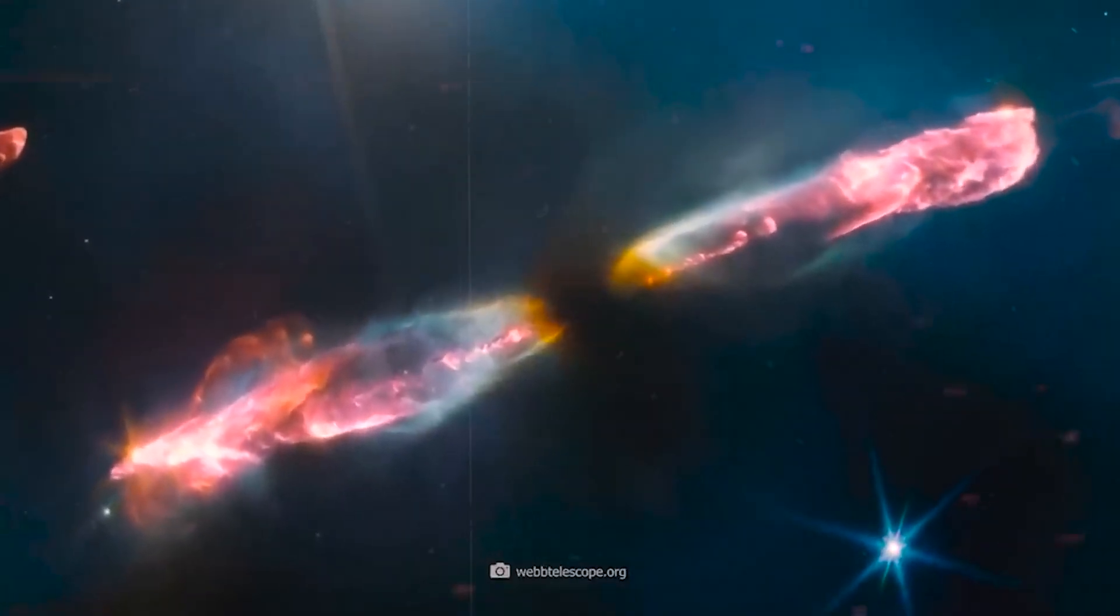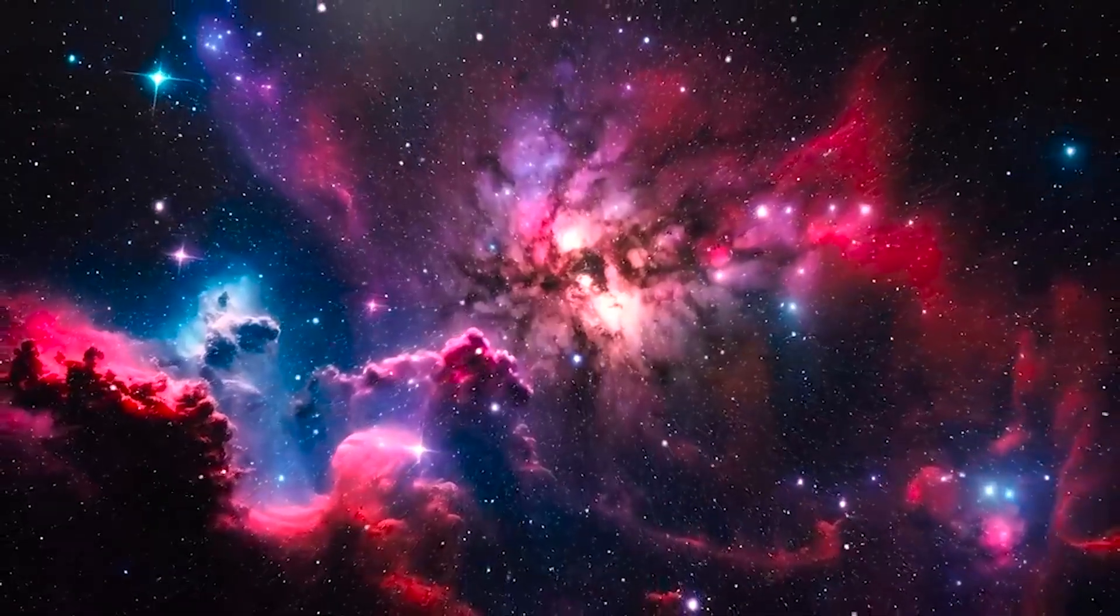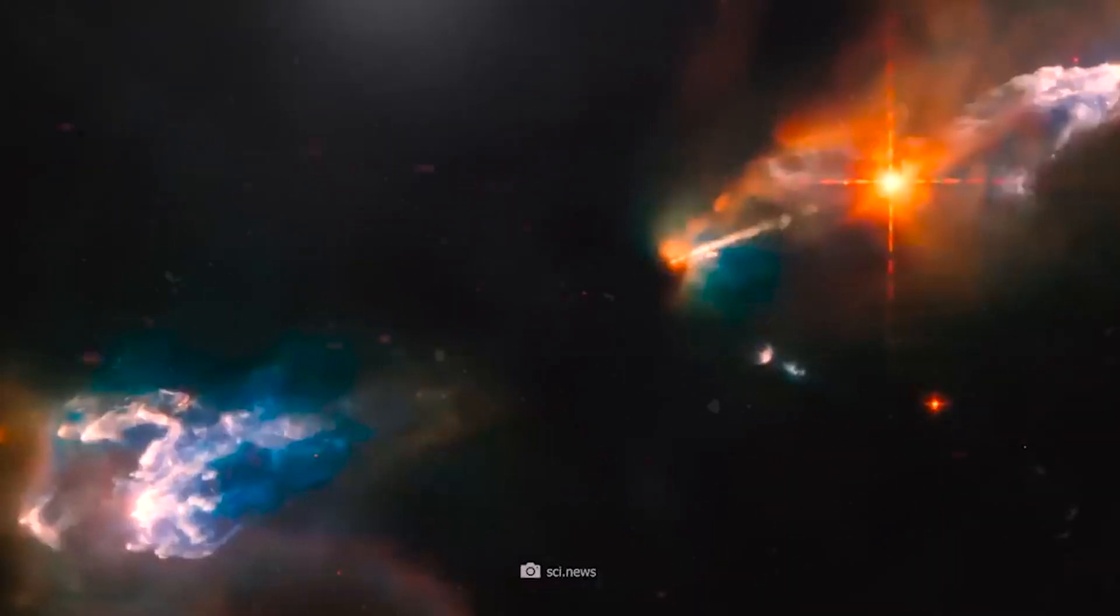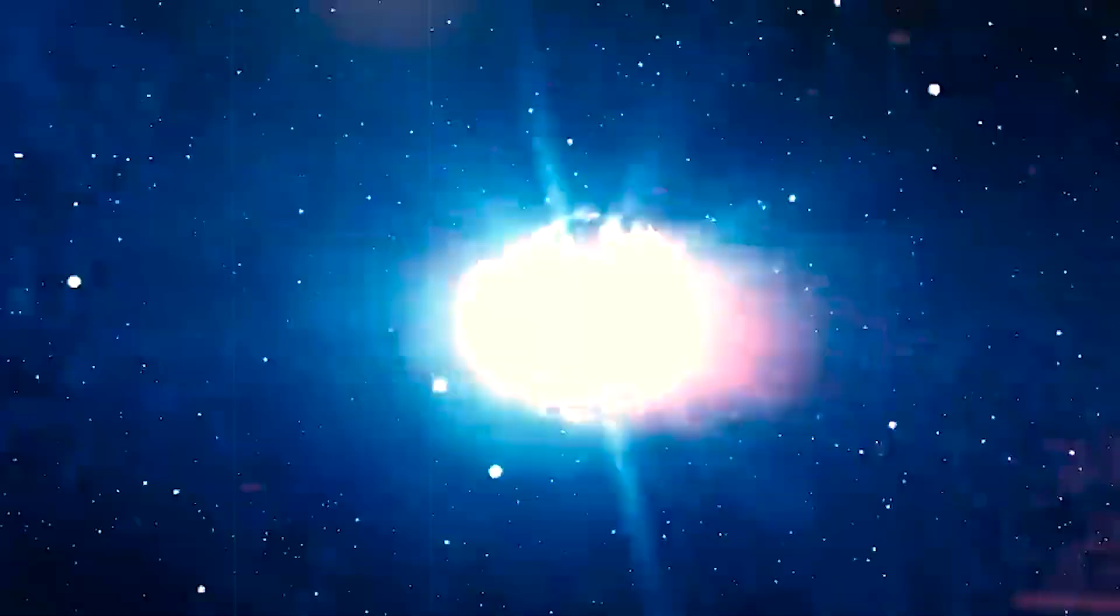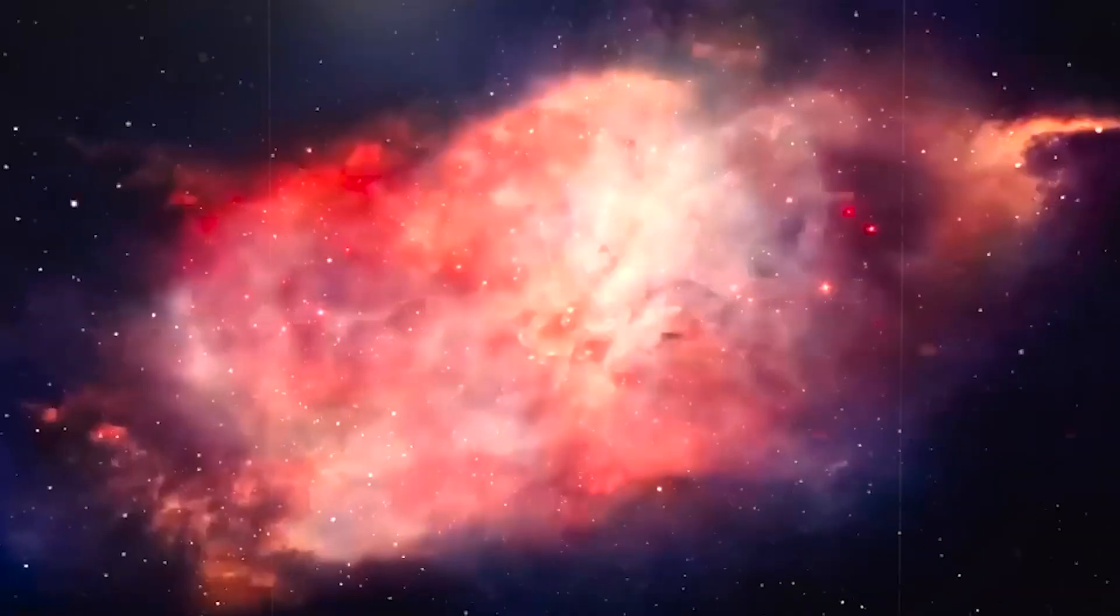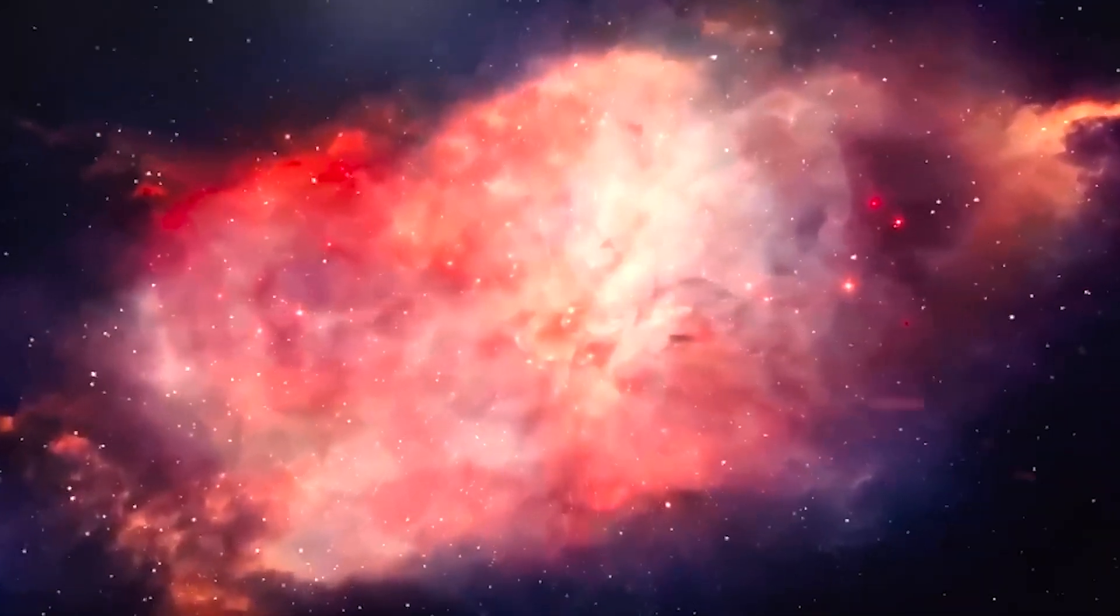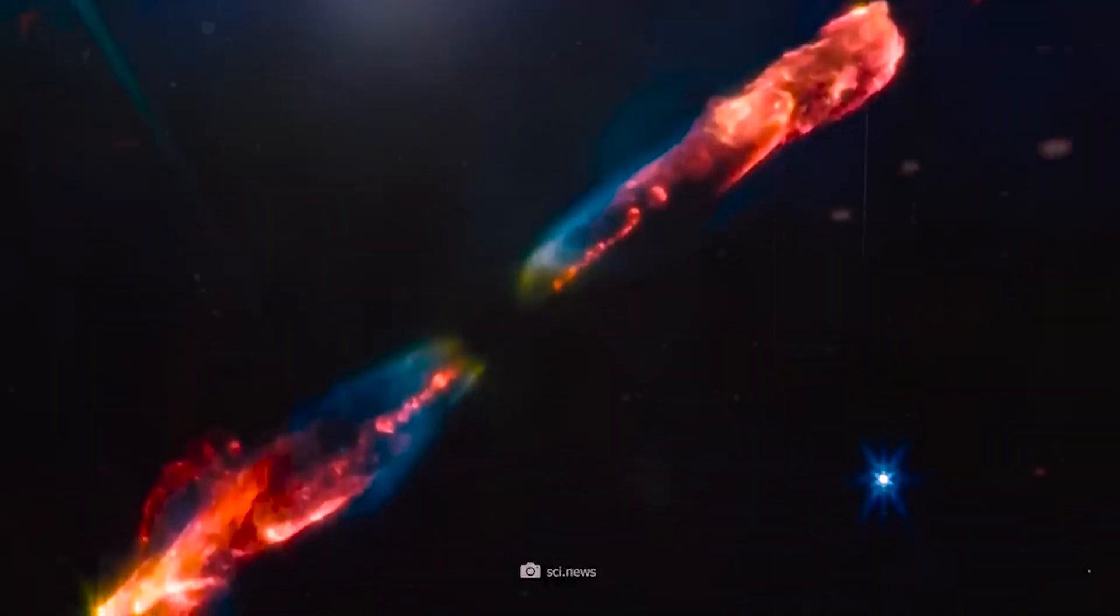Herbig-Haro objects are celestial phenomena associated with the formation of young stars and star-forming regions, named after astronomers George Herbig and Guillermo Haro. Both researchers made the remarkable discovery of these captivating and mesmerizing objects almost simultaneously in the 1950s. It is astonishing to consider that what appears to be a serene birth of a star is actually a rapid journey through interstellar space at supersonic speeds.